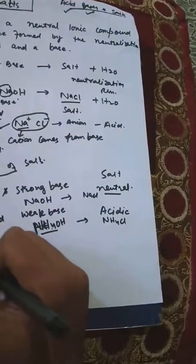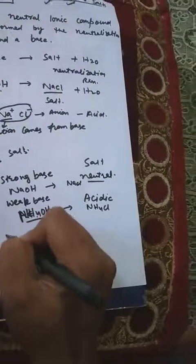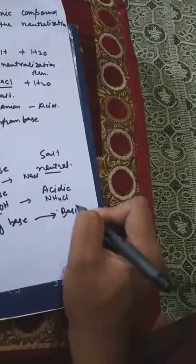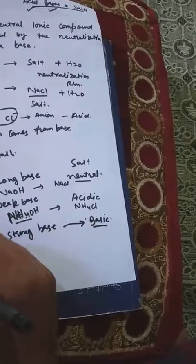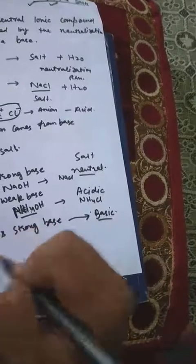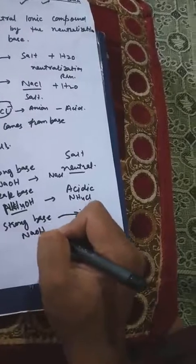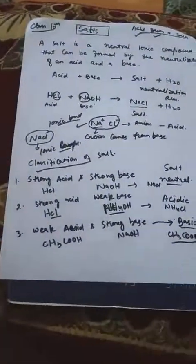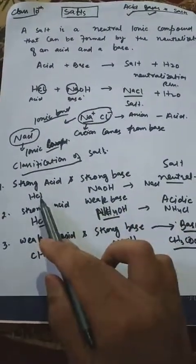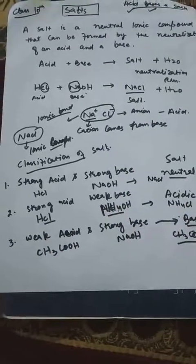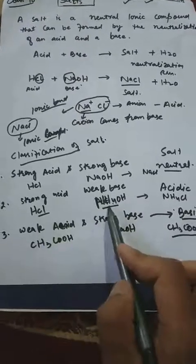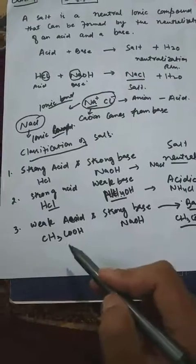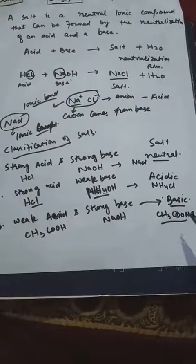If a weak acid and a strong base react, the salt formed will be basic. For example, weak acid CH₃COOH (acetic acid) reacts with strong base NaOH, and the salt formed is CH₃COONa, which is basic. Summary: strong acid + strong base → neutral salt (e.g., NaCl); strong acid + weak base → acidic salt (e.g., NH₄Cl); weak acid + strong base → basic salt (e.g., CH₃COONa).